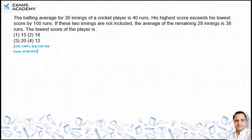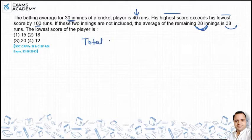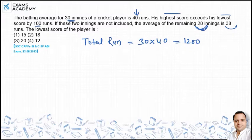The batting average of 30 innings of a cricket player is 40 runs. The difference between the highest score and lowest score is 100. If we let x be the lowest run, then x plus 100 is the highest run.